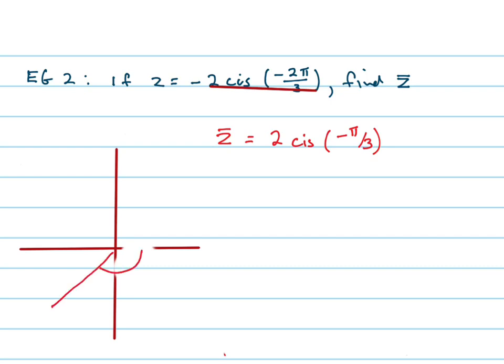So negative 2 pi on 3, and we would call that negative z, wouldn't we? Because I've ignored the negative sign on that one. Now, what we do is we find the conjugate of that. So it's up here. The conjugate of negative z is forming an angle of 2 pi on 3.